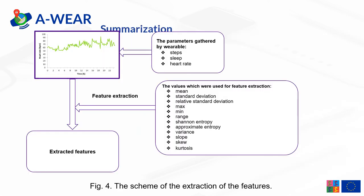On this slide, you can observe in more detail the shape of the feature extraction step. An example of the course of the signal in time is visible in the upper left corner. The parameters analysed were: activity expressed in number of steps, sleep-related parameters, and heart rate. The features extracted included mean, standard deviation, relative standard deviation, maximum, minimum, range, Shannon entropy, approximate entropy, variance, slope, skew, and kurtosis.